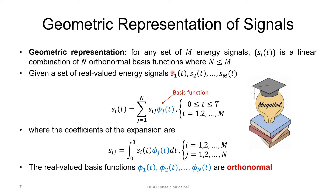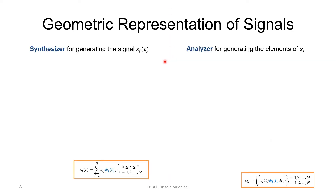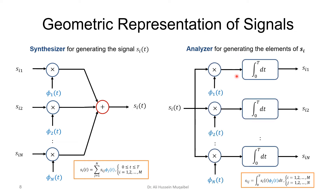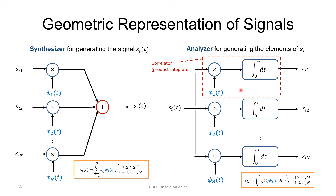The basis function representation can also be shown graphically. To synthesize the waveform, all weighted bases are summed together. On the analysis side, we take the signal, multiply by the basis, and integrate to get the coefficient. Each of these blocks is called a correlator or product integrator — we have a product and integration together. So here we have synthesis and here we have analysis.